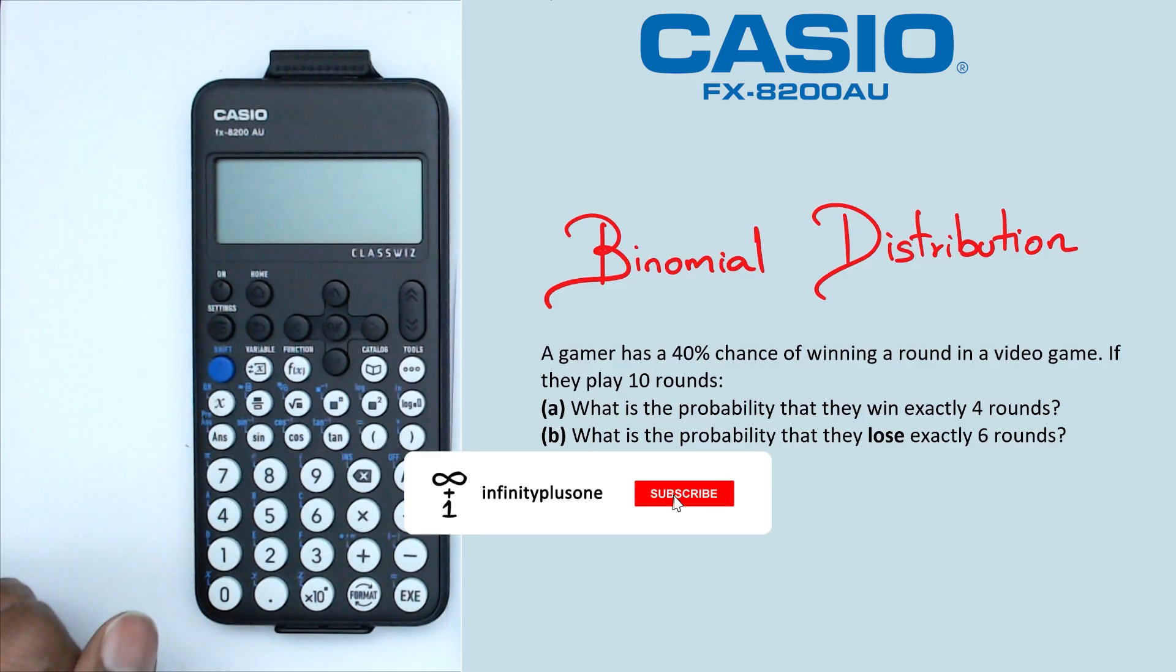All right, so having a look at this binomial distribution, the first thing we have is a 40% chance of winning. So that means the probability is equal to 0.4. And the next thing is they're playing 10 rounds. So that means the number of trials is equal to 10.